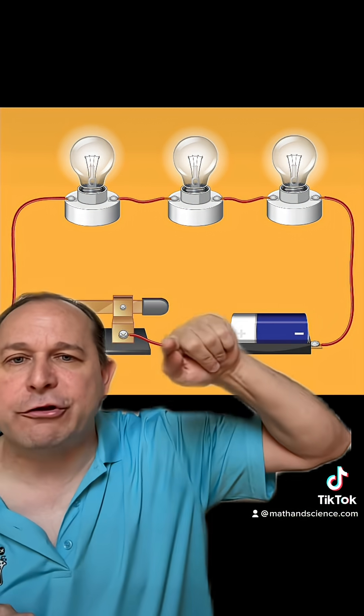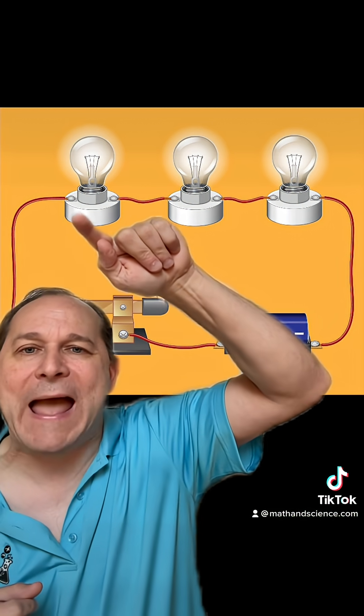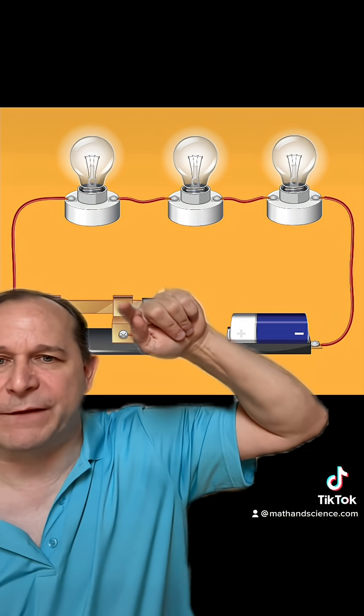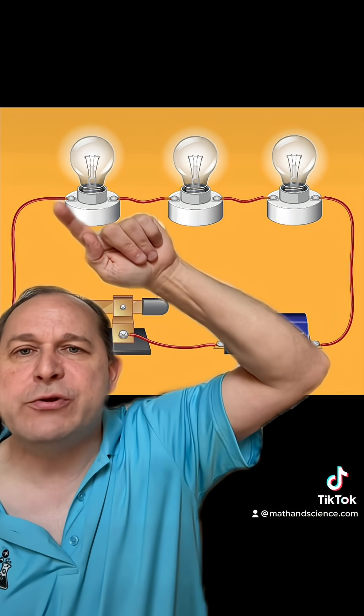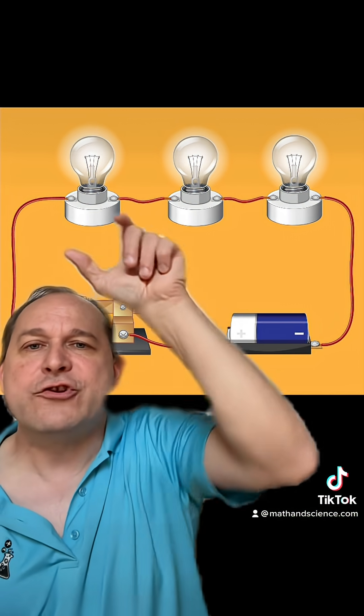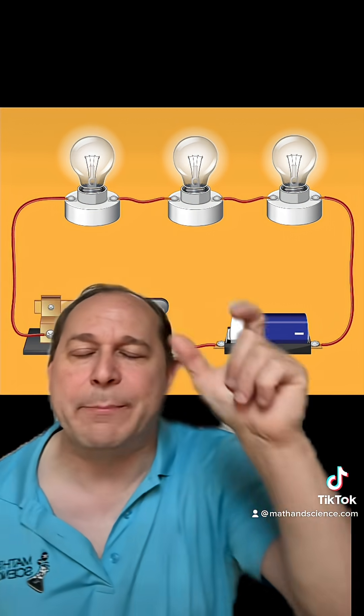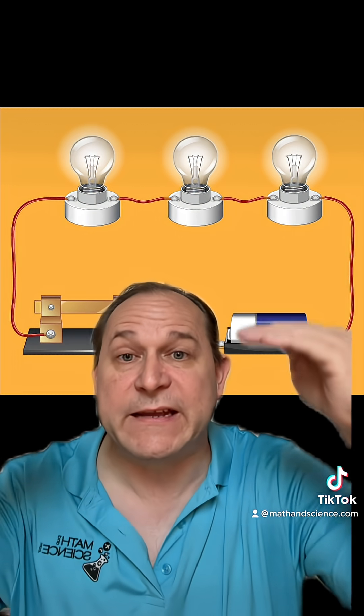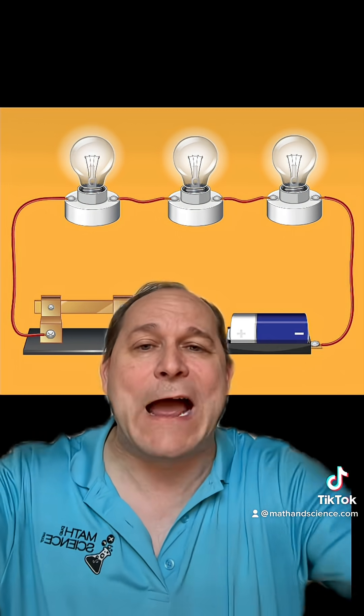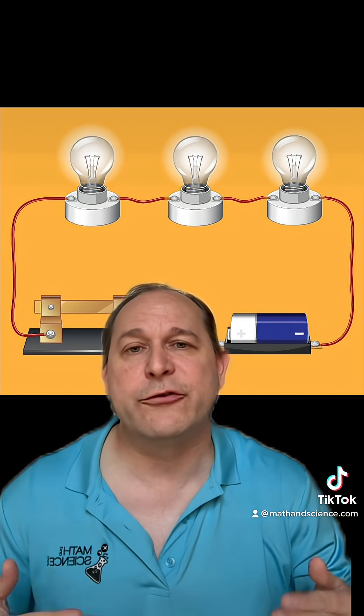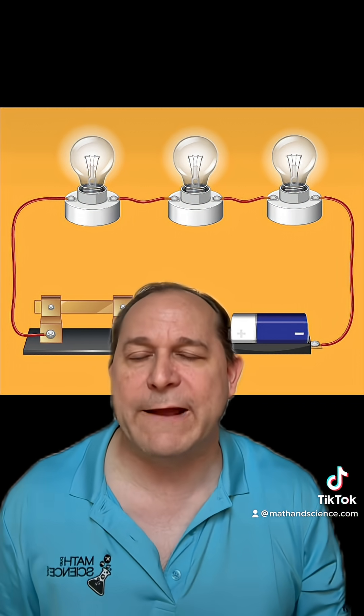And as you start tracing with your finger a path through the circuit, don't count the switch because that's a perfect conductor effectively. When you get to the first resistance, then you're going to encounter a voltage drop. This is just like going down the mountain and your potential energy is now lower than it was before because you've used some of that potential energy to light up the light bulb. In other words, to push the electrons through that first element.